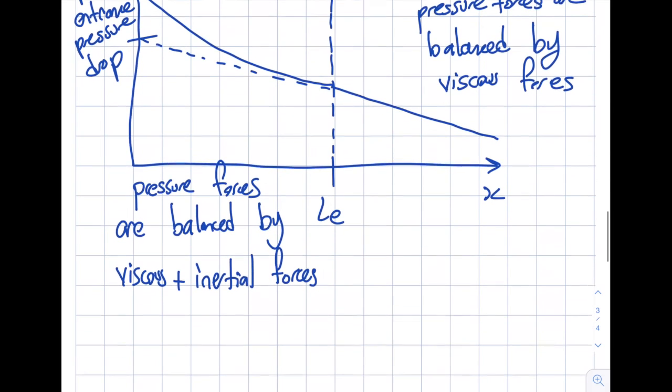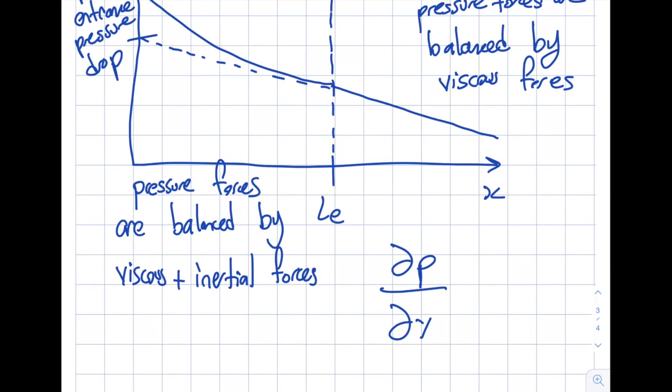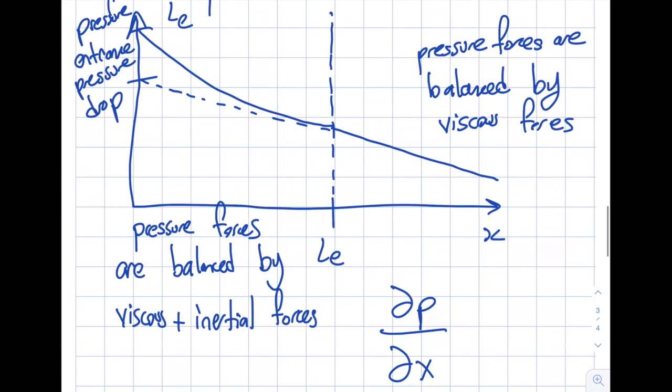This is a very important thing. Let's say that I am interested in del p del x, how does pressure change in the x flow direction. Now if I have a fully developed regime, this will be not zero. I sometimes hear this, just don't say it's zero, it's not zero. It is a constant.